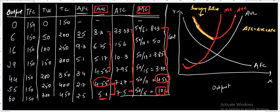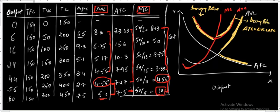In the second phase, the average total cost rises. This happens because the fall in the average fixed cost is less than the rise in the average variable cost. Since the average variable cost rises more than the fall in average fixed cost, the average total cost rises. This may be because of decreasing returns — a typical case of decreasing returns.